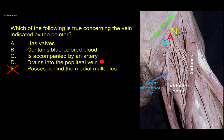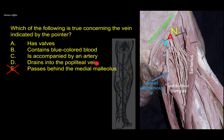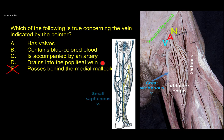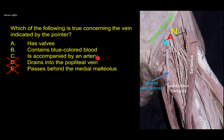Option D — drains into the popliteal vein — is incorrect. Superficial veins drain into deep veins, and the popliteal vein is a deep vein, but the great saphenous vein drains into the femoral vein, which is the upward continuation of the popliteal vein. What drains into the popliteal vein is another superficial vein, the small saphenous vein. Option C — accompanied by an artery — is also incorrect. Superficial veins, whether in the lower or upper limb, are not accompanied by arteries. Only deep veins — located deep to the deep fascia — are accompanied by arteries, such as the femoral vein with the femoral artery and the popliteal vein with the popliteal artery. This is also true for the basilic vein and cephalic vein in the upper limb.